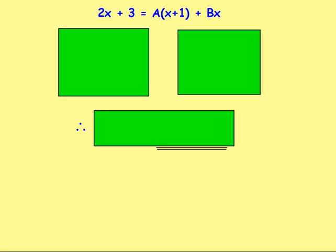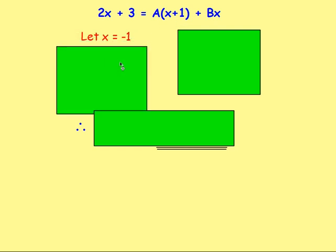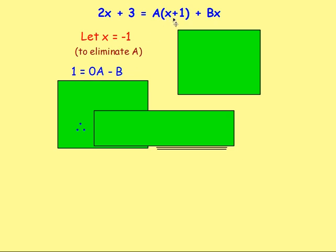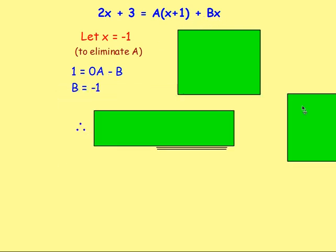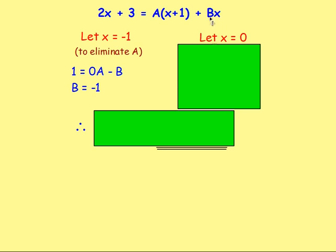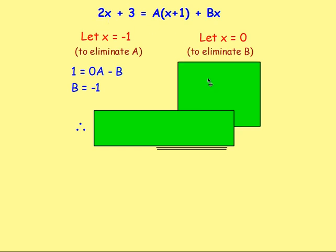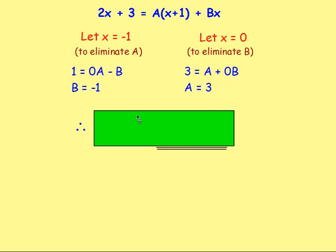The left-hand side and right-hand side are equal. If the denominators are the same, the numerators will also be the same. So cancelling the denominators, 2x plus 3 equals a(x plus 1) plus bx. We need to find the values of a and b. If x equals negative 1, we get 1 equals negative b, so b equals negative 1. If x equals 0, we get 3 equals a. So a equals 3 and b equals negative 1.